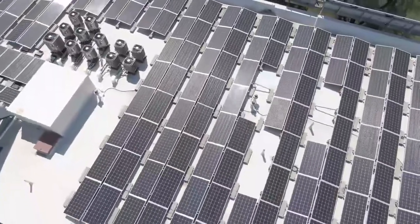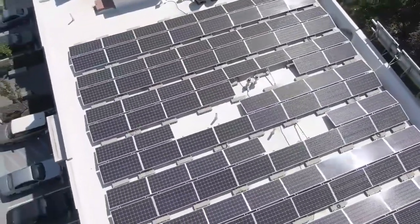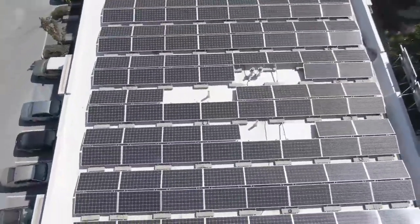But what if you don't have NEPA or the national grid to charge your battery? That's where solar comes in. In a solar inverter system, you have the solar panel and the solar charge controller. The solar panel takes sunlight, converts it to electricity, and sends it to the battery — but first it needs to go through the solar charge controller.